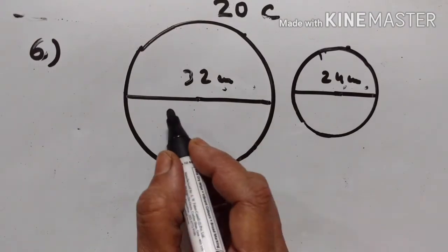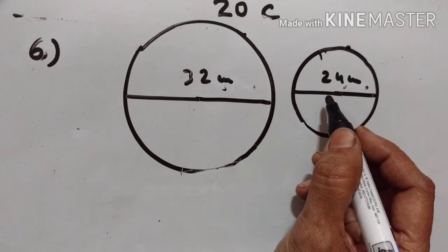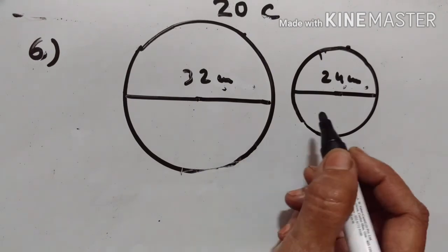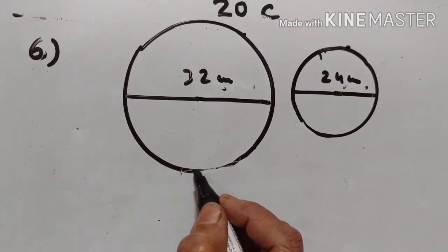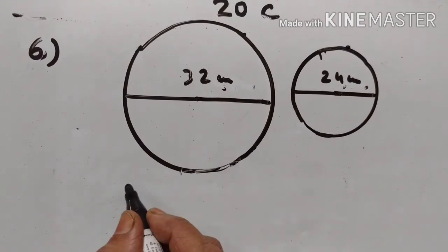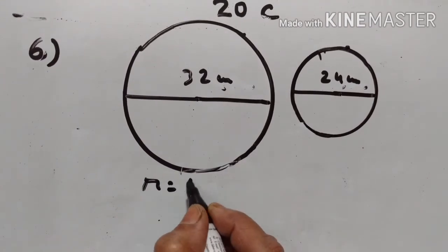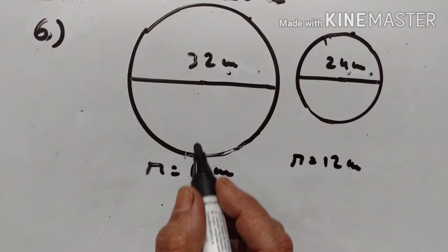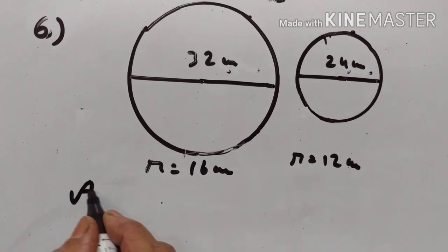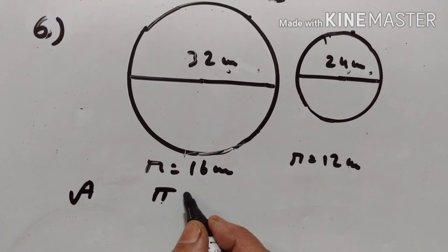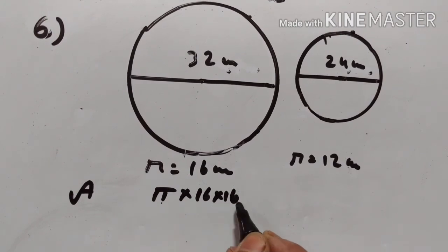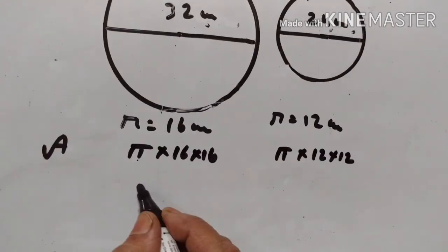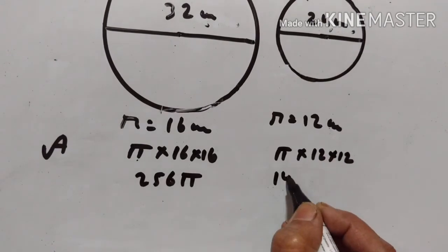Sixth problem. The diameters of two circles are 32 cm and 24 cm. Find the radius of the circle having its area equal to the sum of the areas of these two given circles. The radius of the first circle is 16 cm and the radius of the second is 12 cm. The area of the first is πr² = 256π, and the area of the second is πr² = 144π.